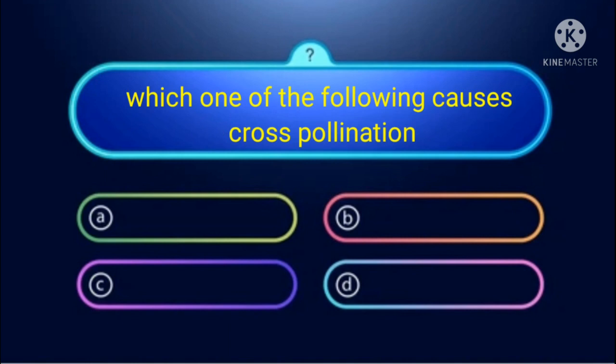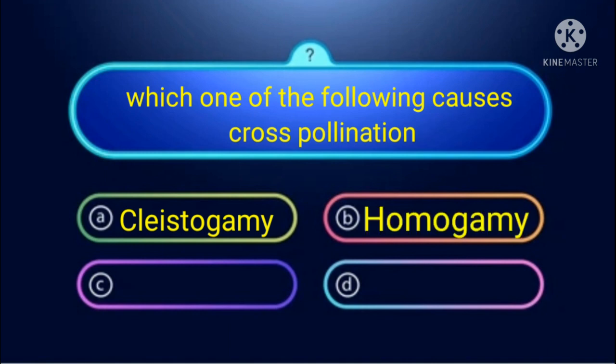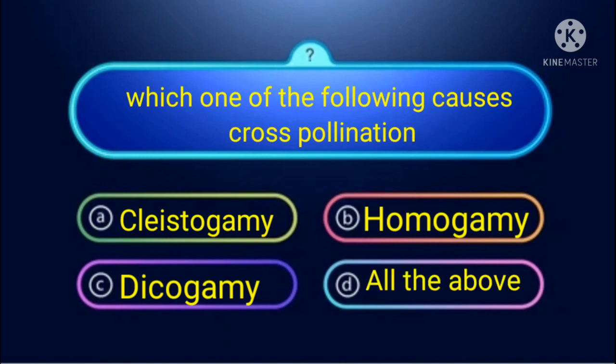Next question: Which one of the following causes cross-pollination? First option is cleistogamy — pollination occurs in a closed flower, in which there is no chance of cross-pollination. If there is pollination in a closed flower, there is no chance of cross-pollination.